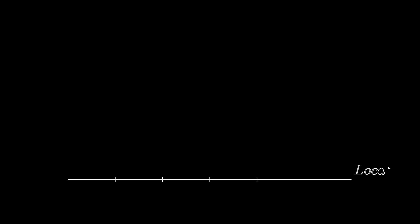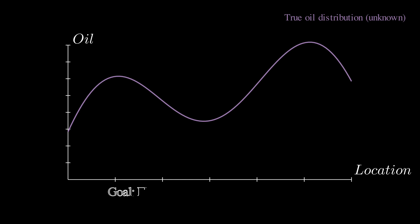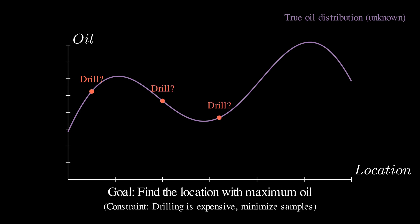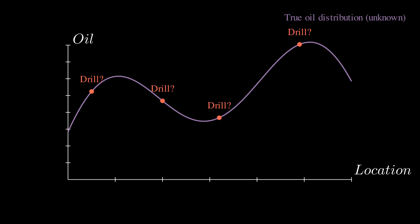Imagine you are an oil prospector with a vast stretch of unexplored land. Your goal is to find the location with the maximum oil content. But here is the catch — drilling is extremely expensive. Each test hole costs millions of dollars, so you want to find that sweet spot with as few drilling operations as possible. The challenge is that initially you have no idea where the oil is distributed — it could be concentrated in one area or spread across multiple locations.